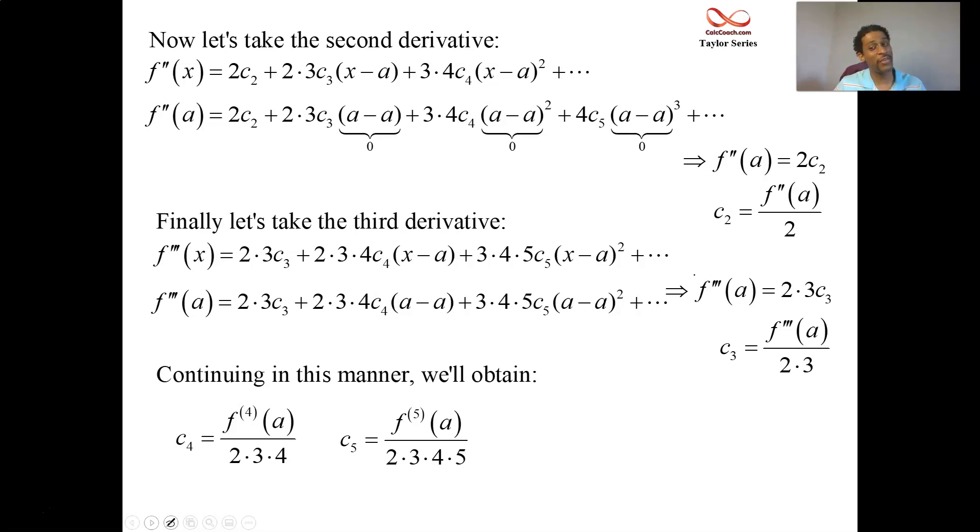And so we're there. We made some wrong guesses along the way, but we're there. And so the generic coefficient c sub n can be found by taking the nth derivative at a, and that denominator there is n factorial. Great job.